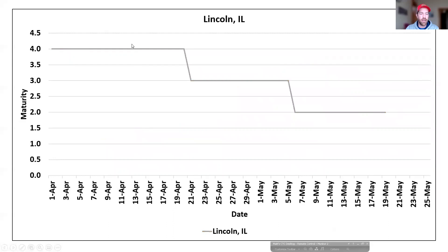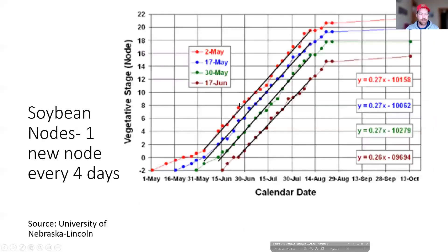Lincoln, Illinois has a wider window for group fours, changing around the 20th of April to group threes around the 5th of May, to group twos. But no matter what your region is or maturity group, the earlier you plant that bean, the quicker you get it emerged and accumulating heat units and nodes. A lot of where your yield comes from with early planted beans is those additional nodes and the extra GDUs from early planting dates.